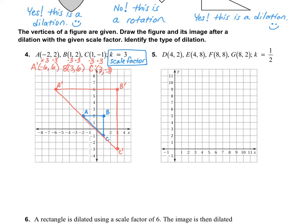Okay, let's go back at the instructions. The vertices of the figure are given. Draw the figure. We did that in blue. And its image after the dilation of the given scale factor, we did that in red. Now the last part says, identify the type of dilation. So since this dilation got bigger, the mathematical term for that is enlargement. So when we identify, we would say enlargement.